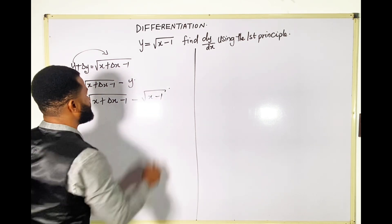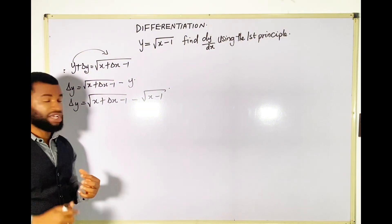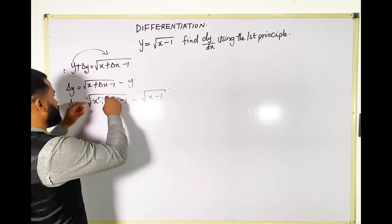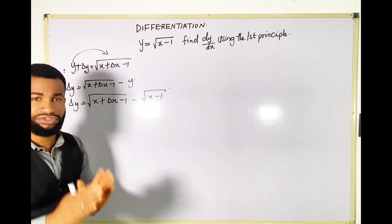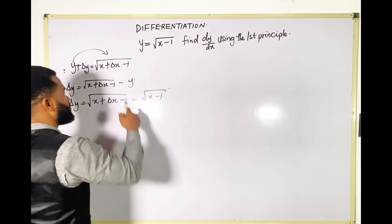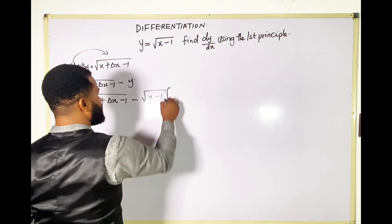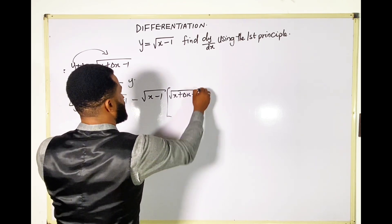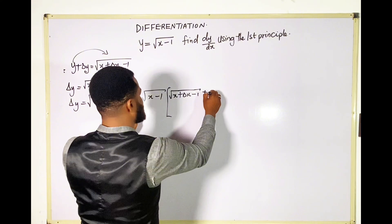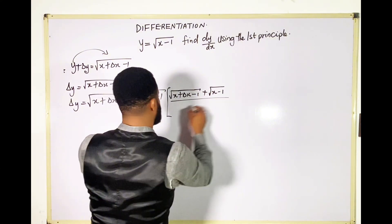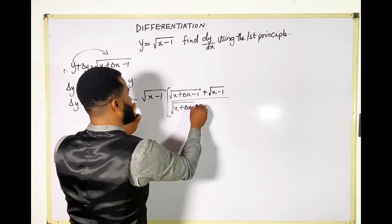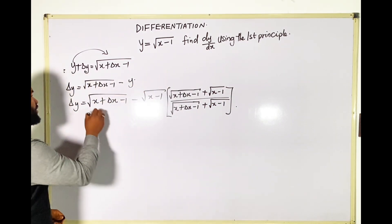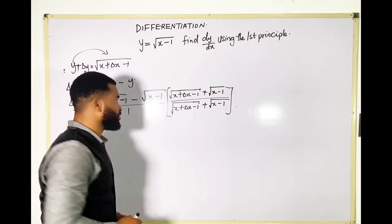Getting to this point, I'm not going to use the binomial theorem — I could, but instead I'm going to rationalize to clear the root. I want to remove this root using the conjugate. I'm going to multiply the numerator and denominator by the conjugate of this expression. So this becomes root (x + Δx − 1) plus root (x − 1), all divided by root (x + Δx − 1) plus root (x − 1).